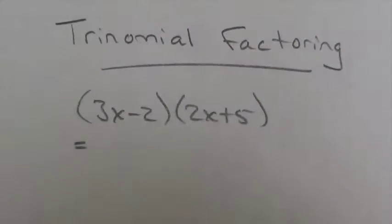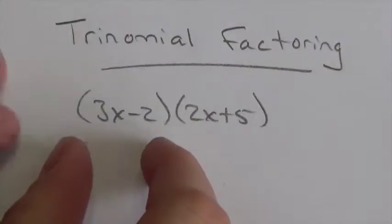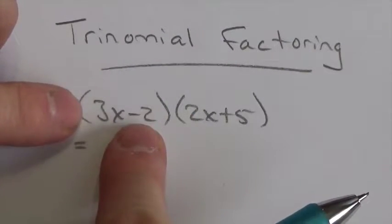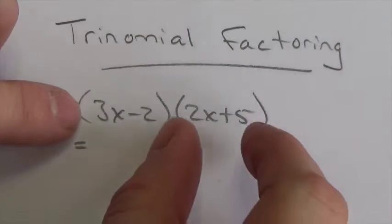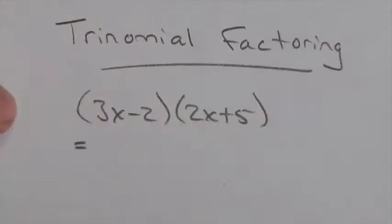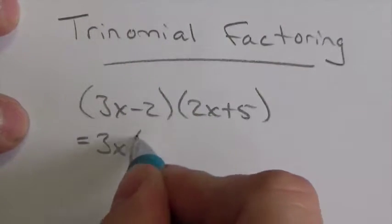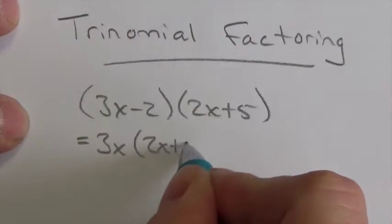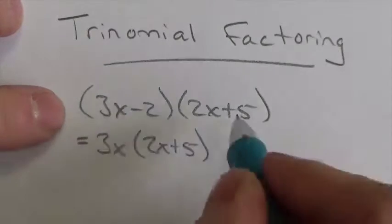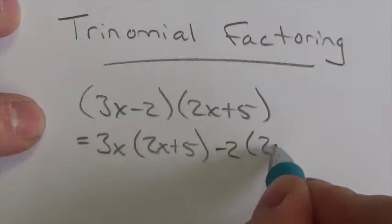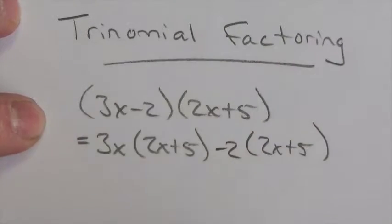So now, first of all, I'm going to expand this out. And remember how that works here. We take both terms from this first binomial and they get distributed to both terms in the second binomial here. It's just a distribution. So 3x will get multiplied by 2x plus 5 and then the negative 2 will also get multiplied by 2x plus 5.